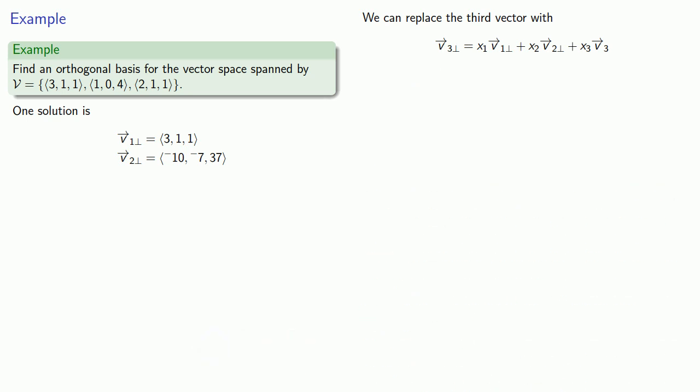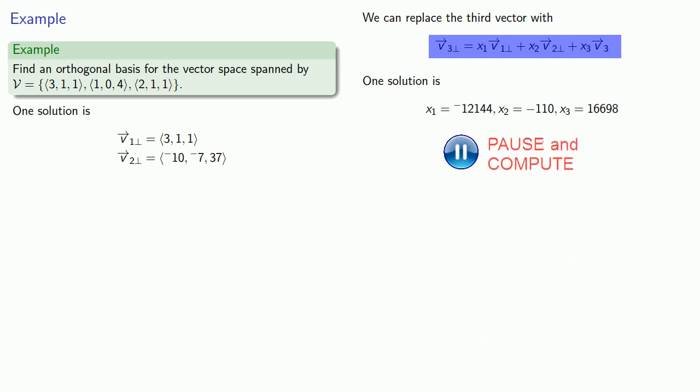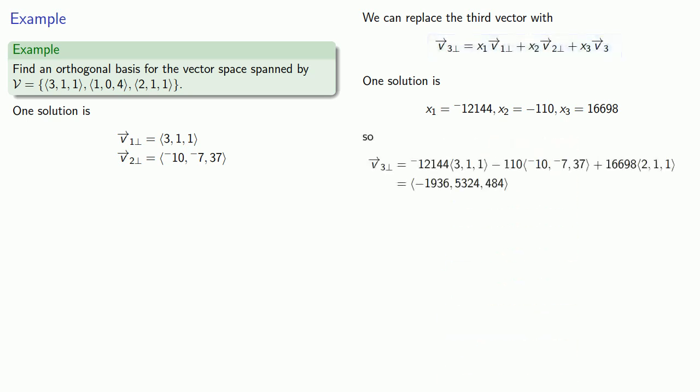One solution is going to be, and we can substitute back into the linear combination that gave us v̄₃⊥, and we find our perpendicular vector. Now, these are fairly large integers, so we might want to reduce them going forward. One of the things we note here is that we can actually remove a common factor of 484 from the components of this last vector.